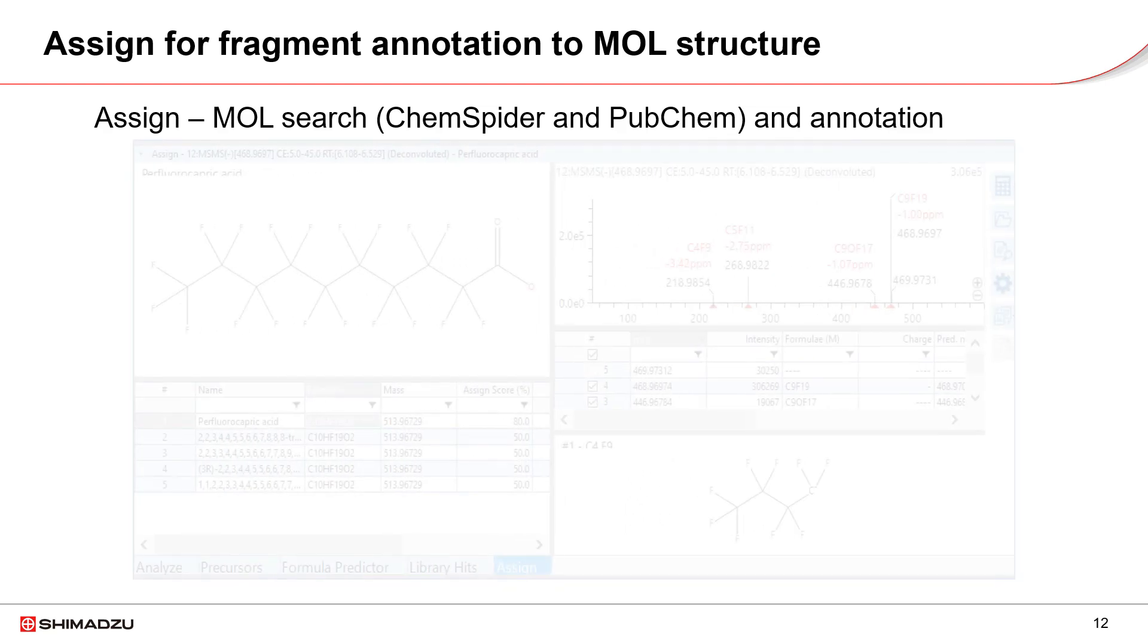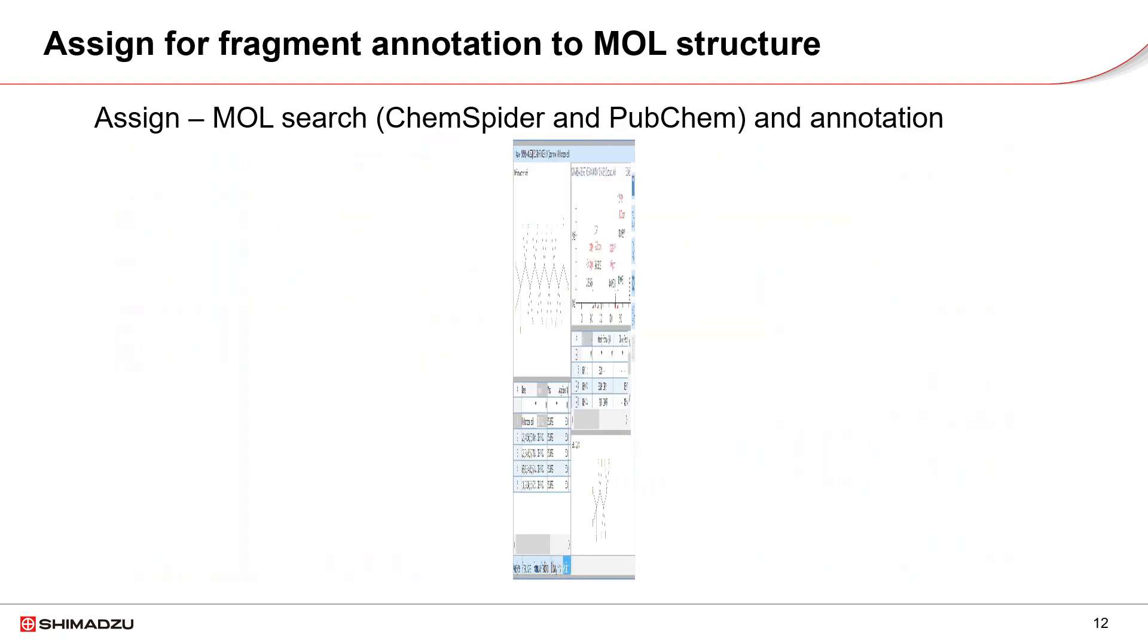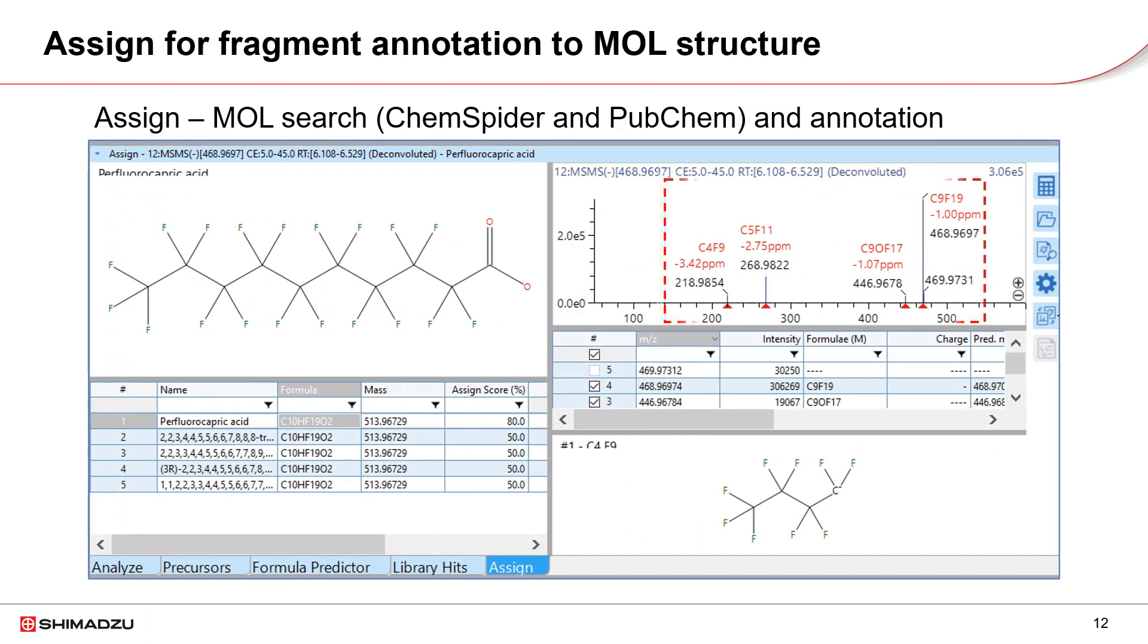Another function of the software is called assign. The fragments in the MS-MS spectrum can be annotated to molecular structure. The molecular structure of a suspected PFAS molecule can be searched from public compound database such as ChemSpider and PubChem. These fragment annotations may support or reject the identification result.